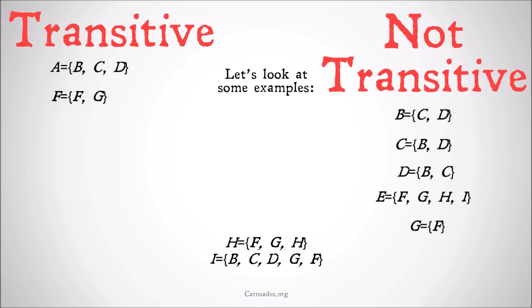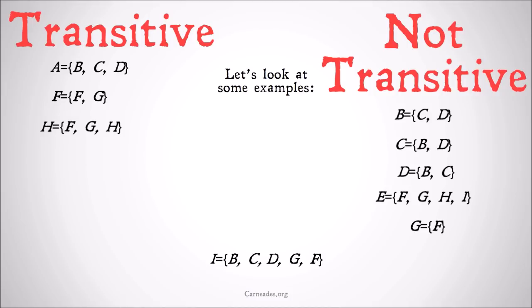What about H? H has as its members F, G, and H. F is a subset of H because F is just F and G. G is a subset of H because G is just F and F is a member of H. And H is a subset of H because all sets are subsets of themselves. So H is transitive. What about I? B is a subset of I because B contains C and D. C is also a subset of I because C only contains B and D. D similarly is a subset of I containing B and C. G is a subset of I because G contains F, and F is a subset of I because F contains F and G. So all members of I are also subsets of I — I is transitive.